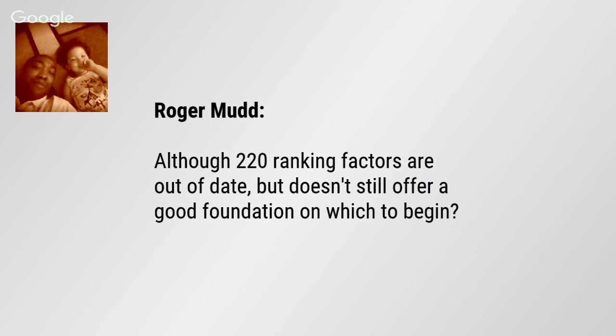There's a question from Roger Mudd: although the 200 ranking factors are out of date, doesn't it still offer a good foundation? No. It would if Google had published what those 200 factors were. But they never did. And we've still got people speculating about what those 200 factors may be, when they haven't been 200 factors for over seven years. If they're seven years behind speculating on where they were, they're probably not going to be very accurate speculating on where they are today.